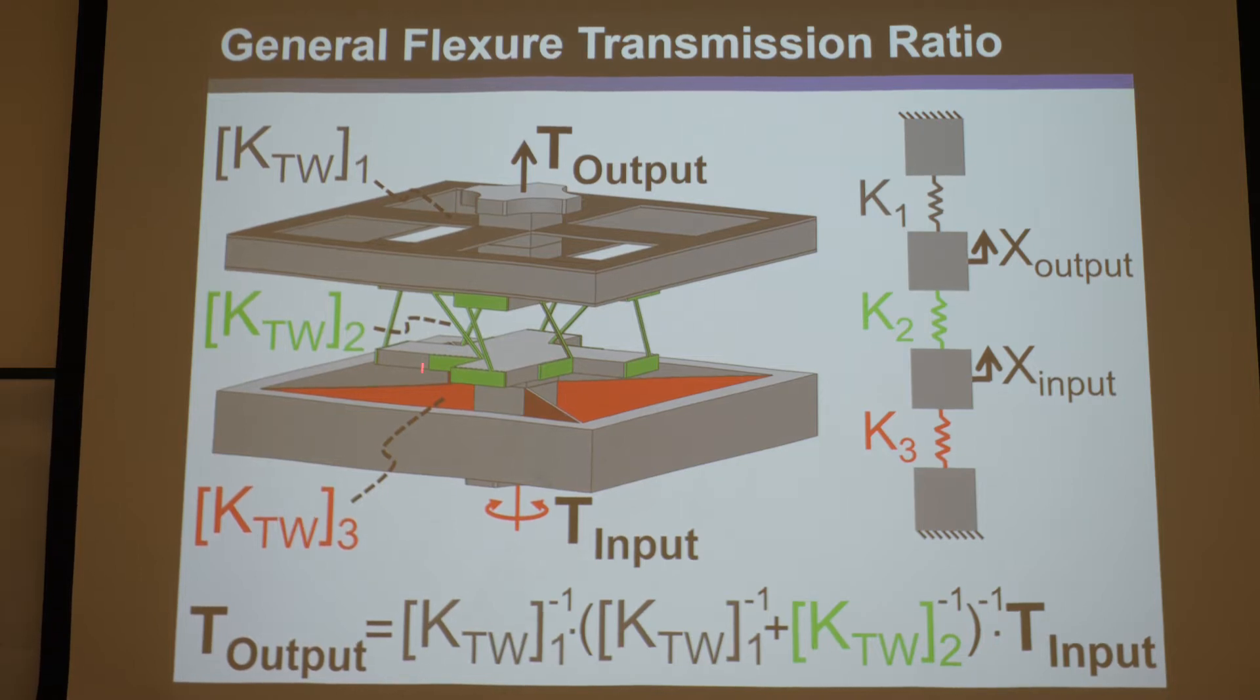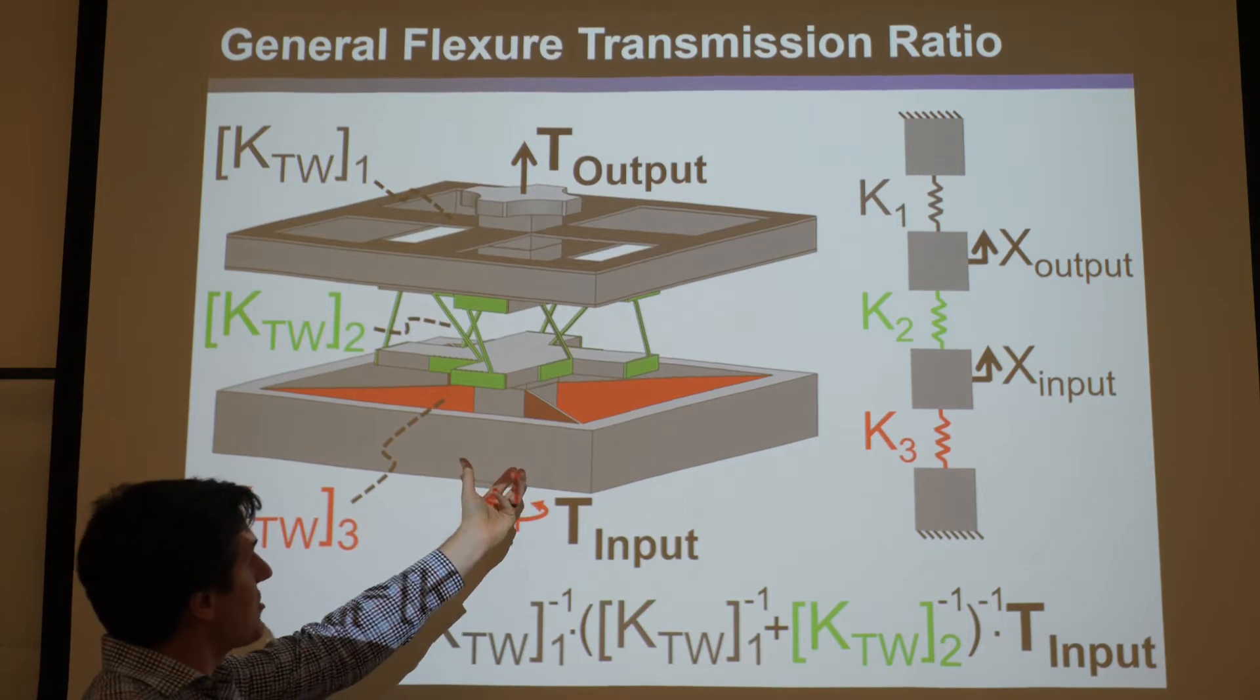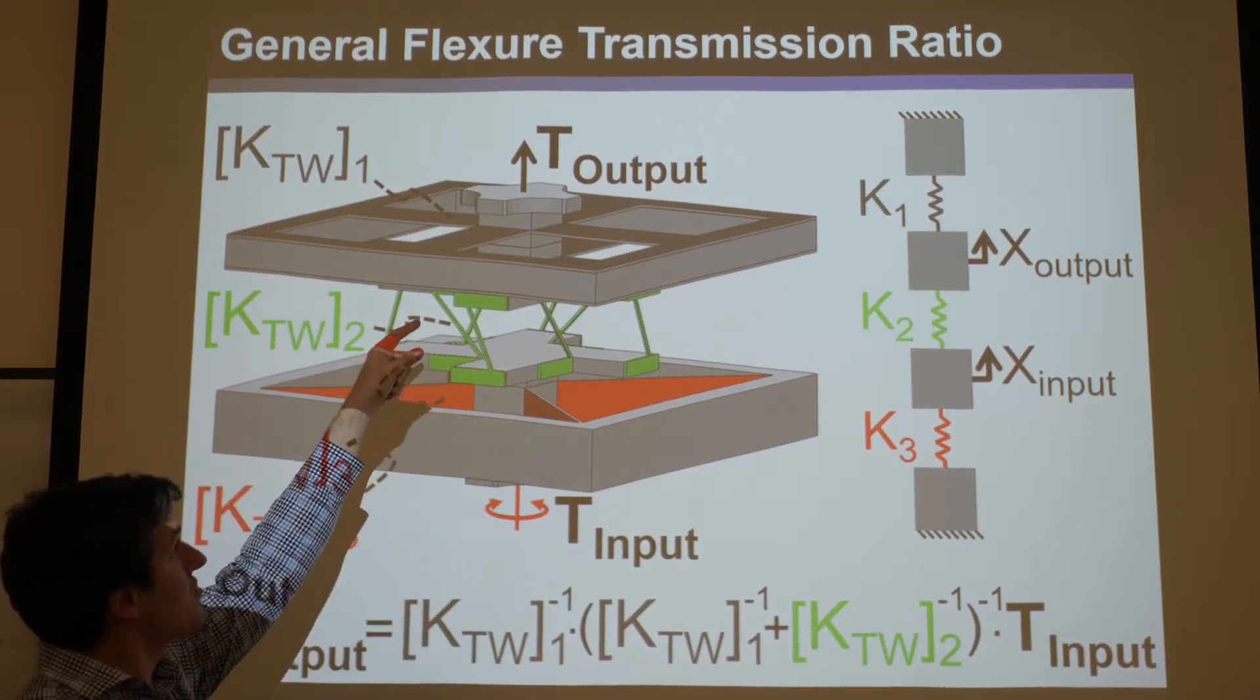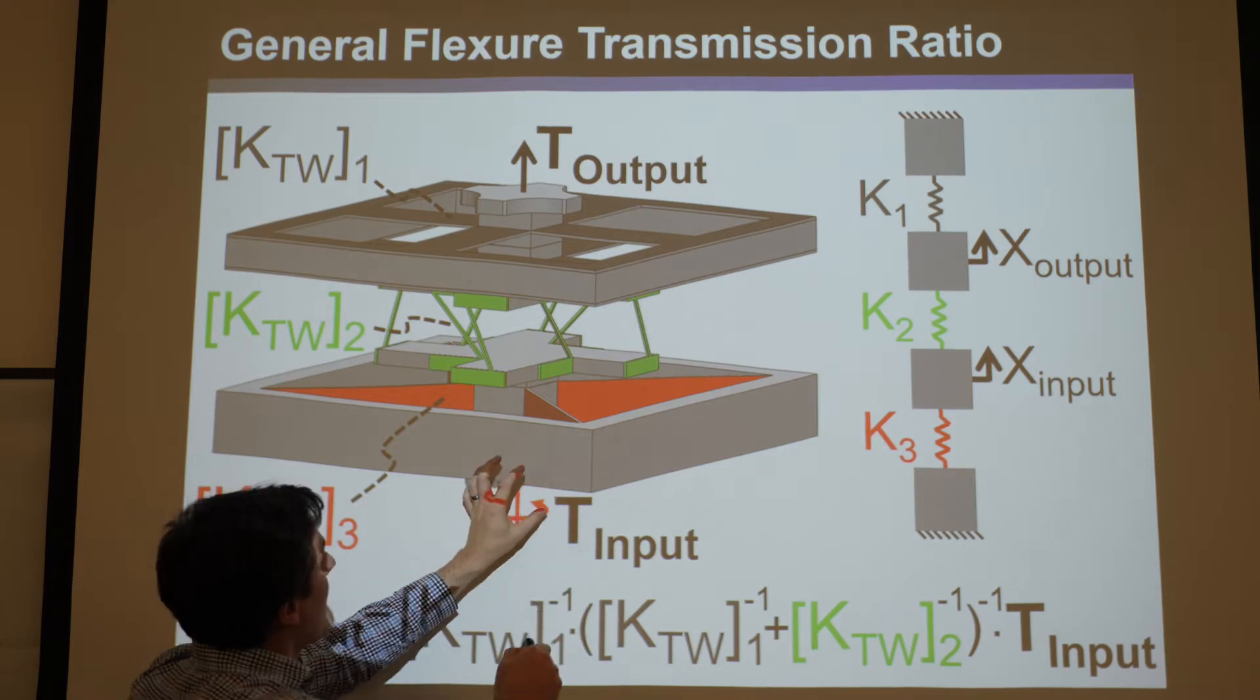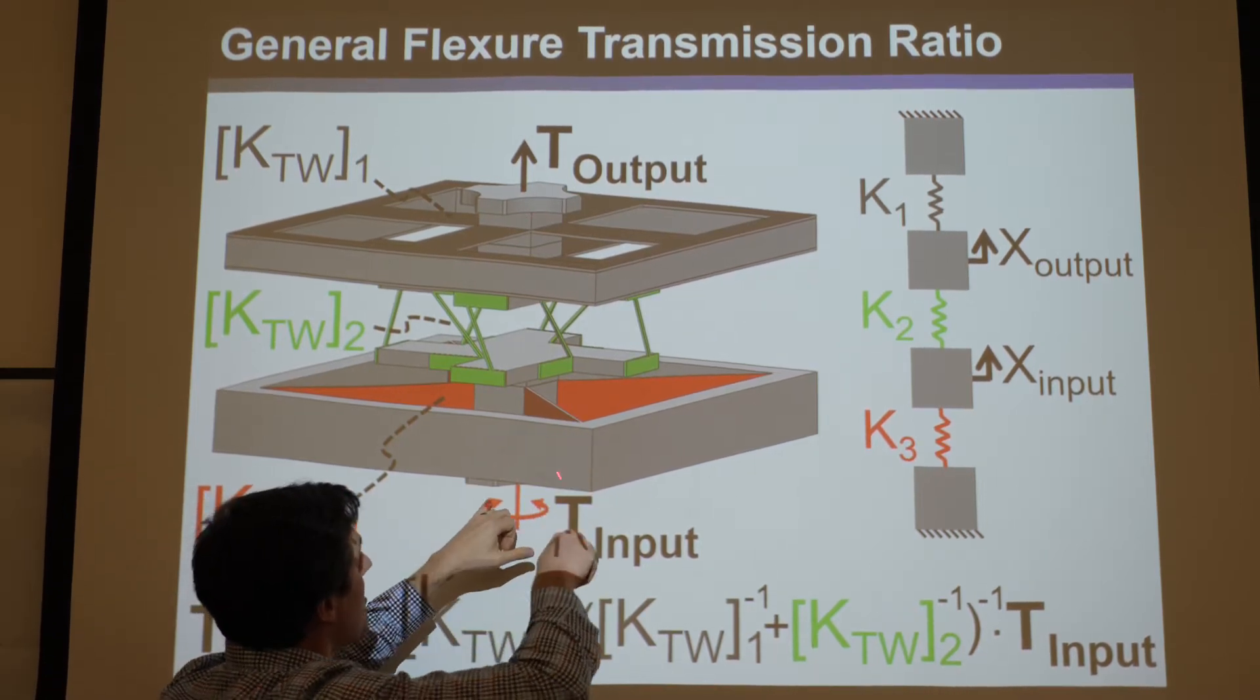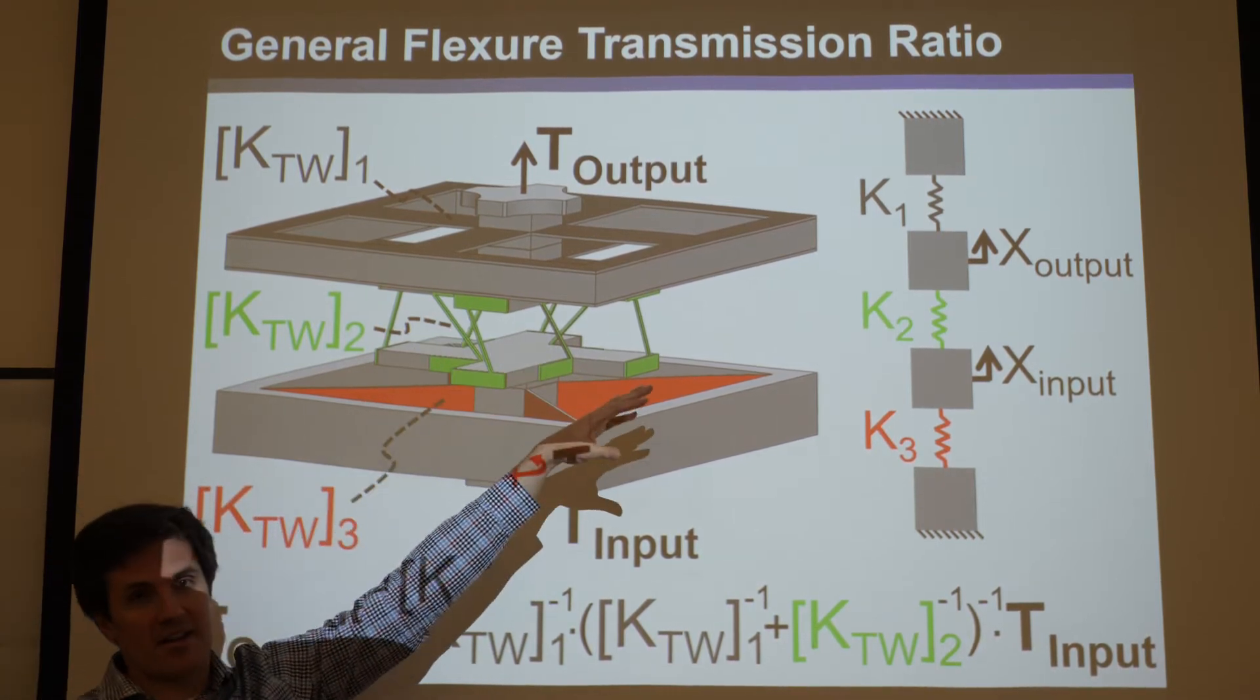If these were all ideal constraints, meaning they were infinitely stiff along their axis and infinitely compliant in all directions, then the transmission ratio between the rotational input and the translational output - if I rotated this and got some output, if I took that displacement output divided it by the rotation, that would be the pitch of this screw mechanism.